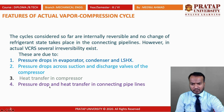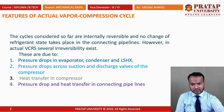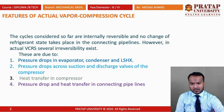Third, heat transfer occurs in the compressor — in the real system it is a polytropic process, so heat can be transferred into or out of the compressor, causing irreversibility. Fourth, there is pressure drop and heat transfer in the connecting pipeline: the pipeline connecting the evaporator to the compressor has pressure drop, and heat enters from the surroundings into the pipe.